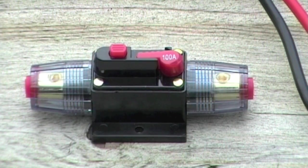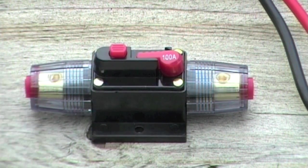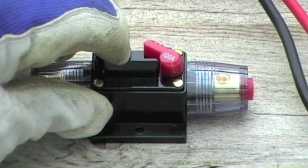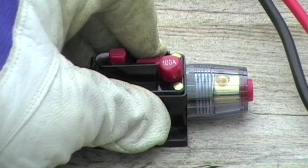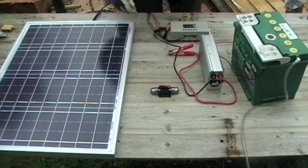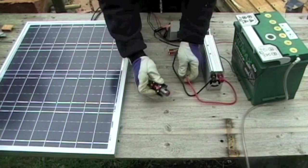This one is rated at 100 amps. If the current goes above that, the breaker will trip and cut off the power. And then it can be reset with this little lever. I'll wire it into the red, that's the positive cable, on the inverter.